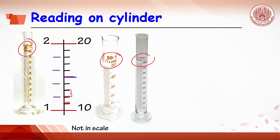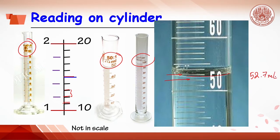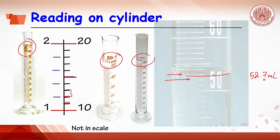For example, reading the water volume in a 100 mL cylinder: make sure to read at the meniscus. The water level is located between 52 and 53, so one uncertain digit between these two numbers is estimated. This reading should be 52.7 mL, where 0.7 is the uncertain digit.